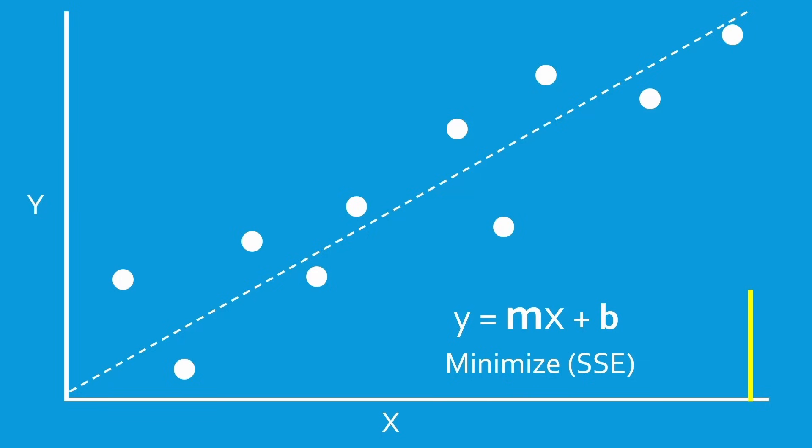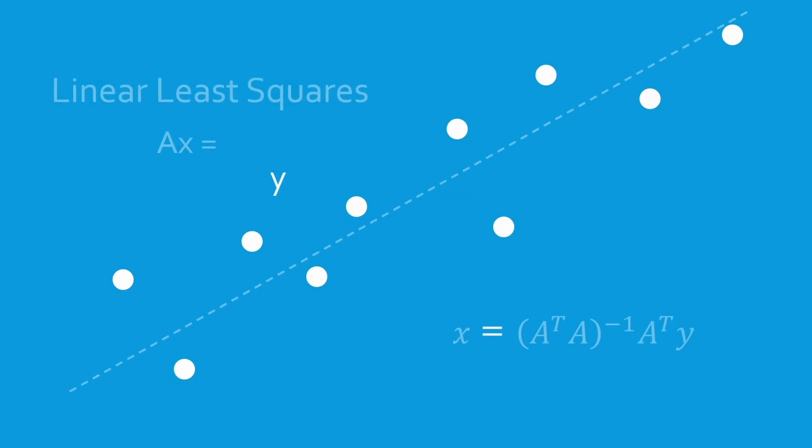Here we're trying to fit a line, which makes this a linear least squares problem. Linear least squares has a closed-form solution and can be solved by solving a system of linear equations.